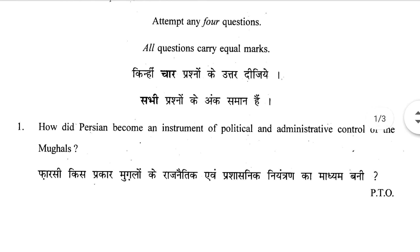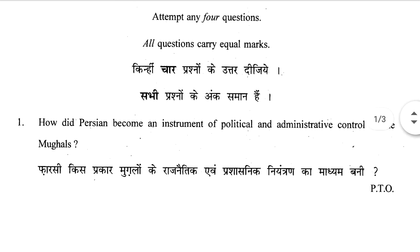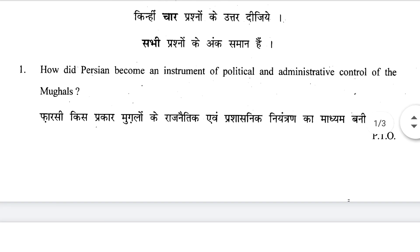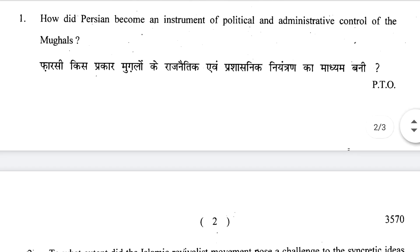Question number one: How did Persian become an instrument of political and administrative control of the Mughals? We know that Persian was a court language, so this is an important question about the Persian language and its role in Mughal governance.